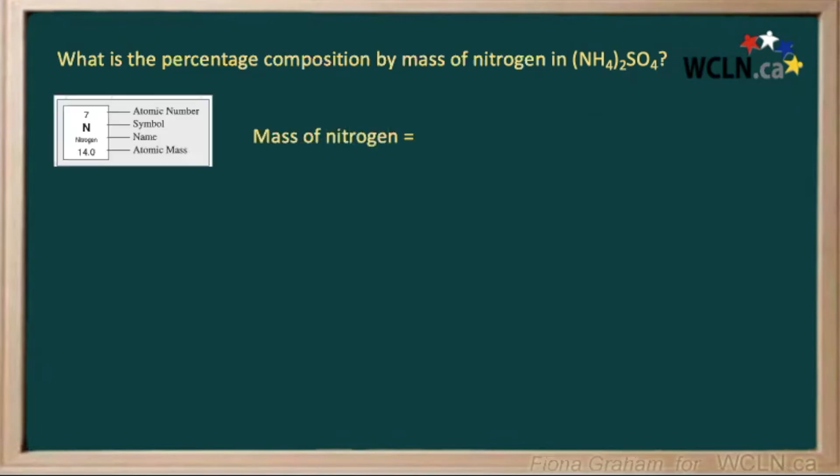So the mass of our nitrogen would equal the total number of nitrogens that we have in our ammonium sulfate, and that would be two times our atomic mass of 14, giving us 28 atomic mass units.